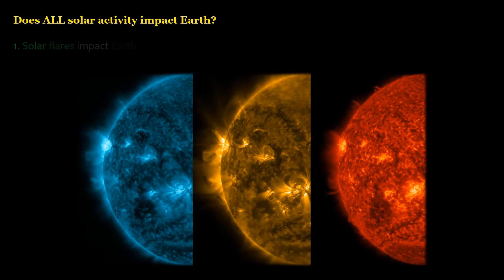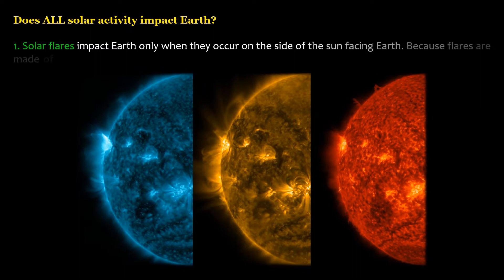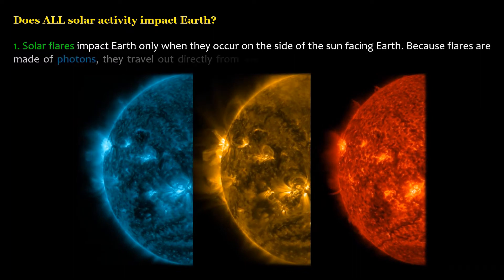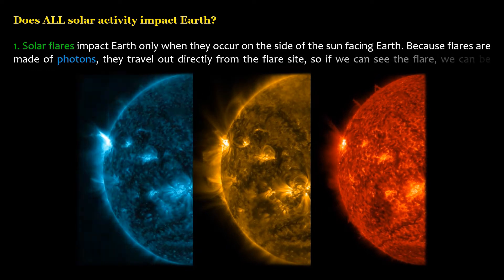Solar flares impact Earth only when they occur on the side of the sun facing Earth. Because flares are made of photons, they travel out directly from the flare site, so if we can see the flare, we can be impacted by it.